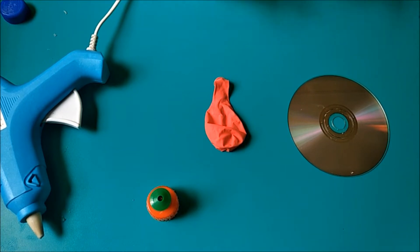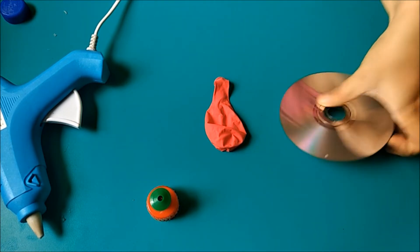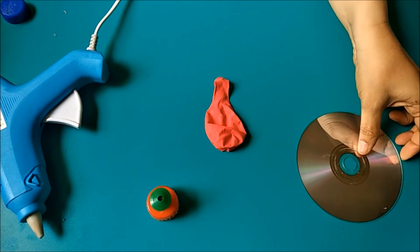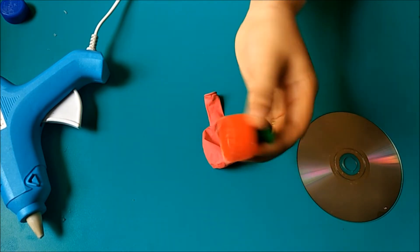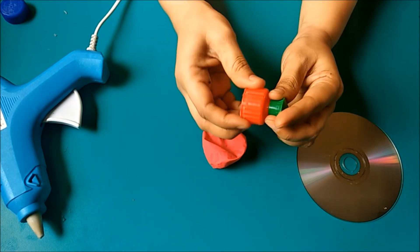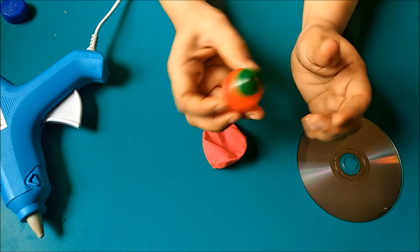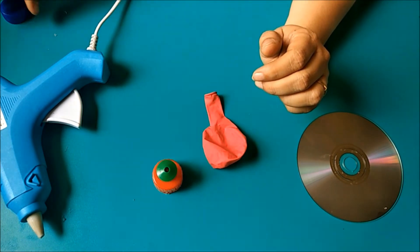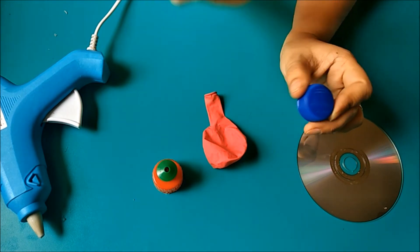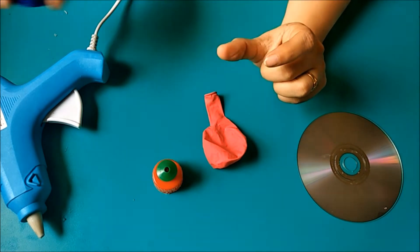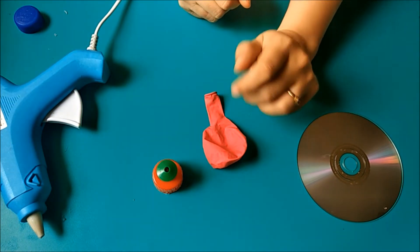make this hovercraft and then talk about it. For this experiment we need one old CD, a balloon, and one cap. Here I am using a liquid dish wash soap bottle lid. You can use this kind of lid also, but you have to make a hole in it. And we need glue.